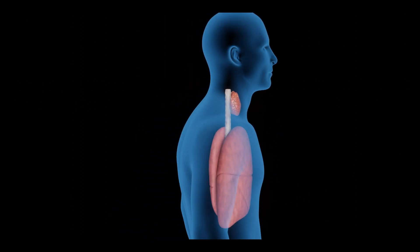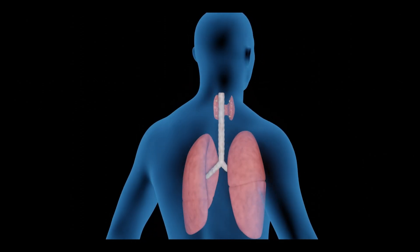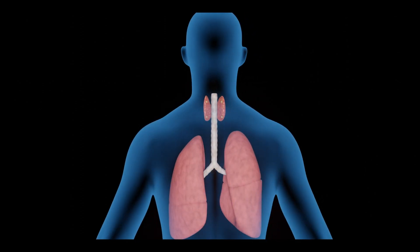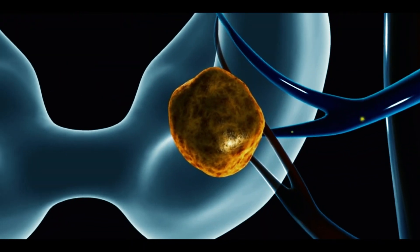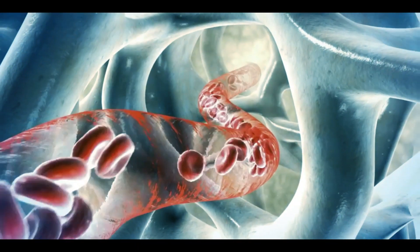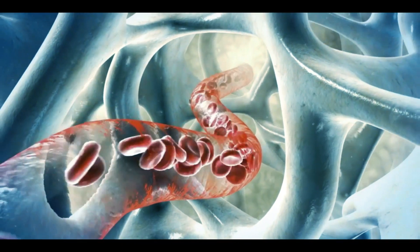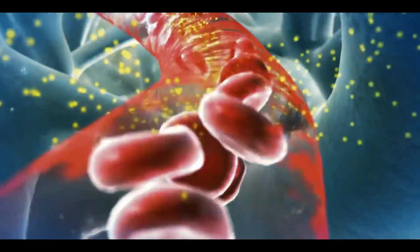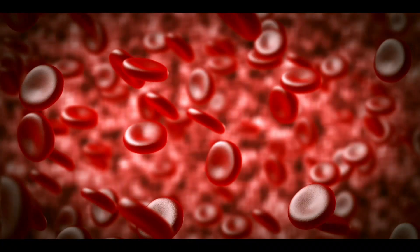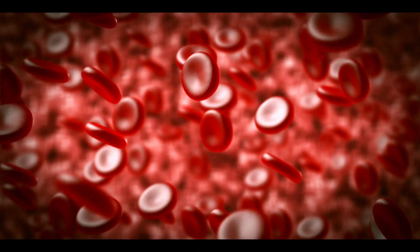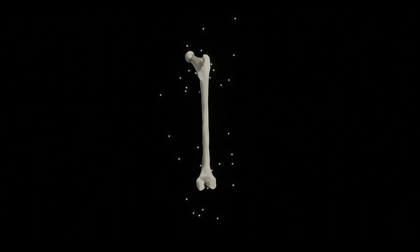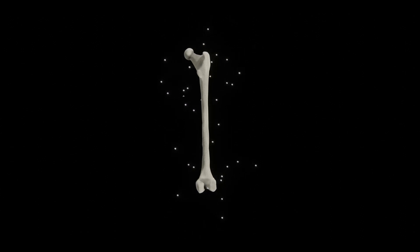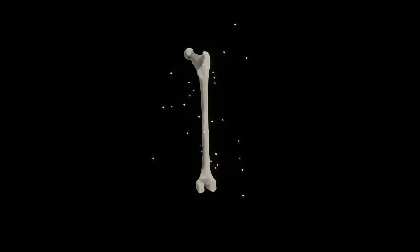Parathyroid glands are four pea-sized glands attached behind the thyroid glands in our neck. These glands release parathyroid hormone into the blood, which regulates blood calcium levels. If calcium levels drop in the blood, parathyroid hormone causes release of calcium from bones into the blood to normalize the blood calcium level.